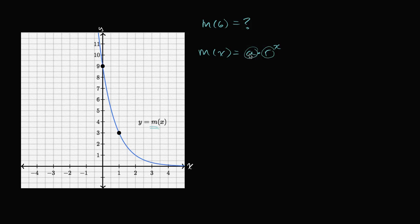The initial value is pretty straightforward. It's just going to be what m of zero is. So a is going to be equal to m of zero. And we can just look at this graph. When x is equal to zero, the function is equal to nine. So it's equal to nine.